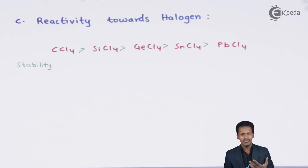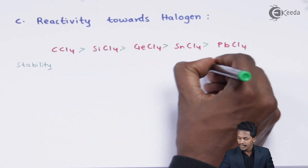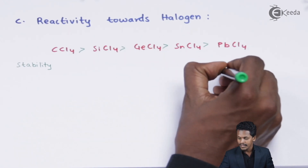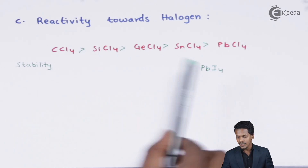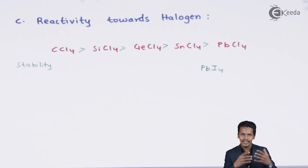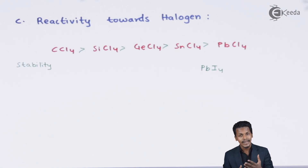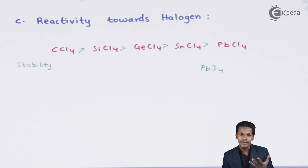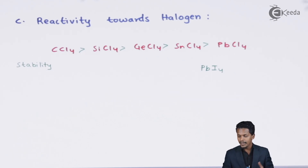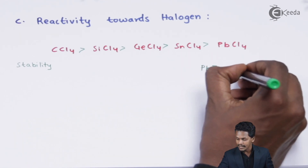PbCl4 can be formed, but PbI4 does not exist. The reason is that lead has a larger atomic size and iodine also has a larger atomic size, so the bond does not form. Additionally, the stable oxidation state of lead is +2 (Pb²⁺), which is why PbI4 does not exist.